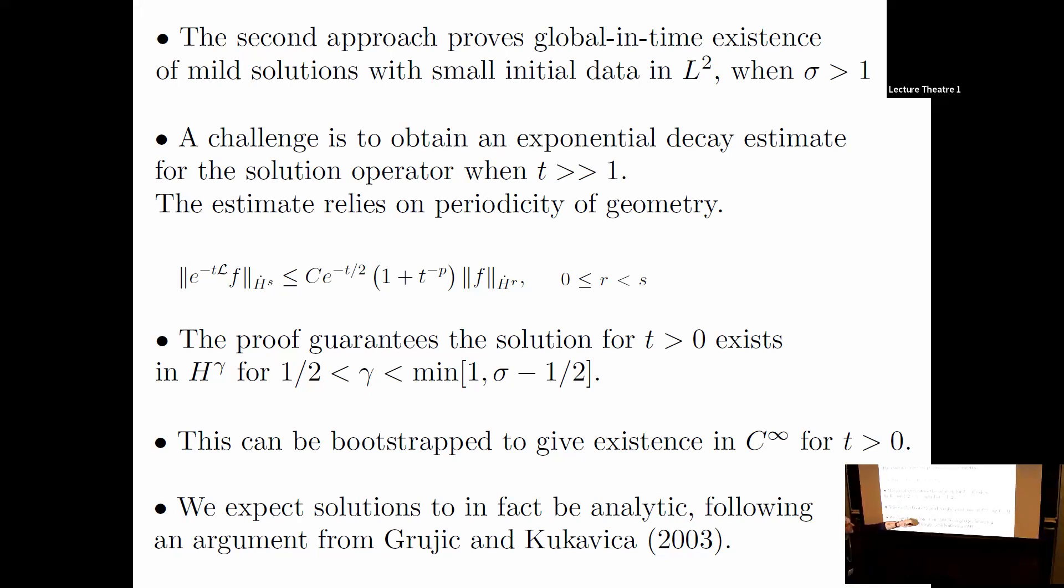The proof guarantees that a solution for T greater than zero exists. Starting with L2 data, it exists in a space with more derivatives, the Sobolev space H^gamma. This is hard to parse, so let me unpack it. Suppose sigma is one, near the boundary of what I can do. Sigma has to be bigger than one, so this is a little bigger than one-half. For gamma roughly around one-half, I go from data in L2 to solution in H^{1/2}. If I increase sigma, gamma can get bigger.